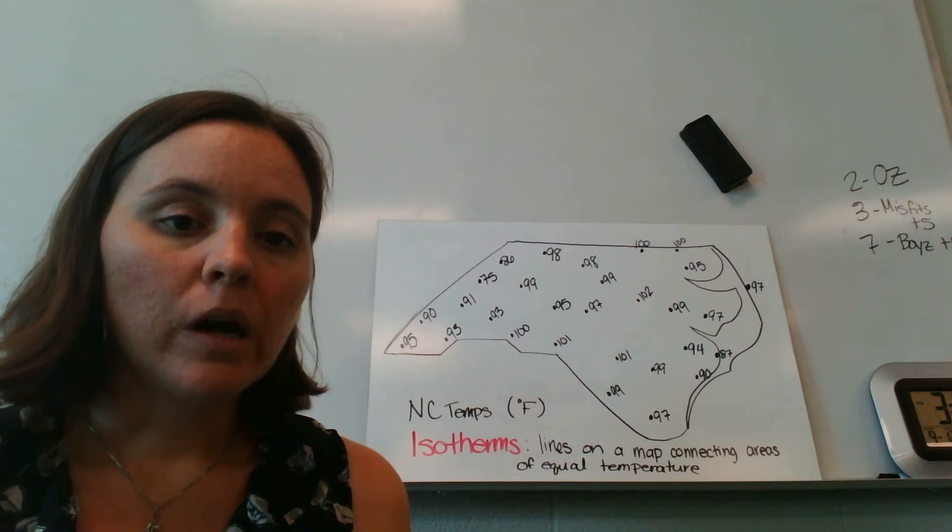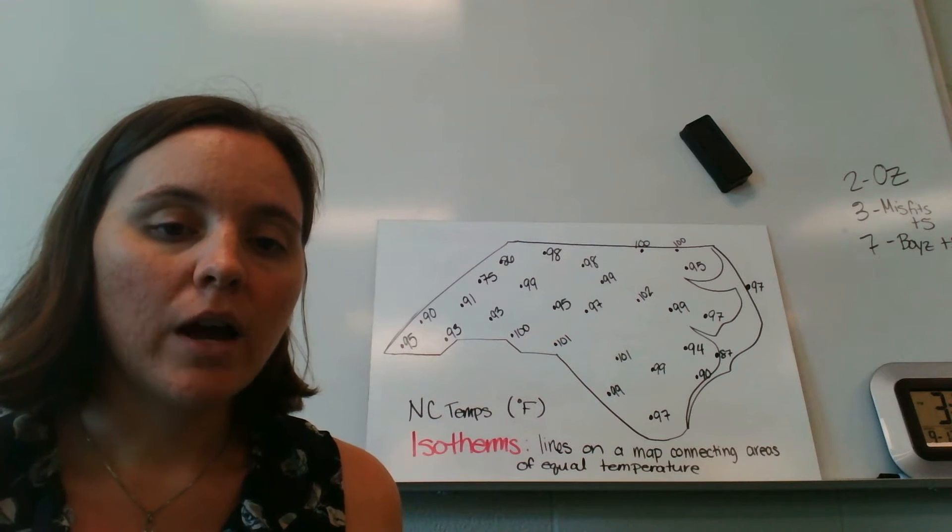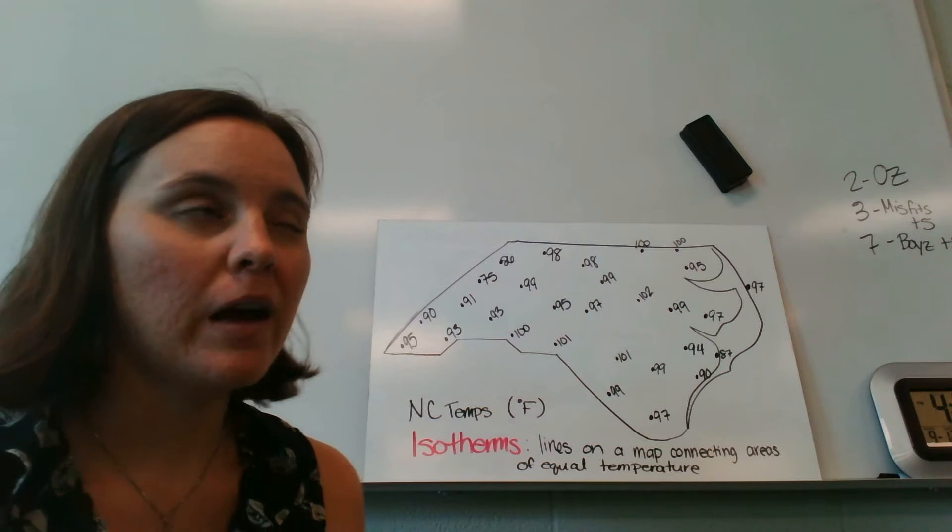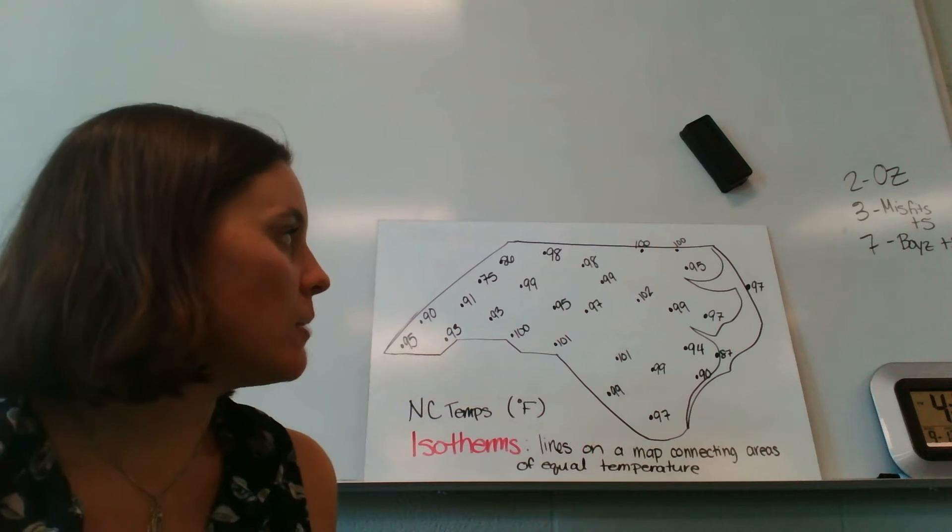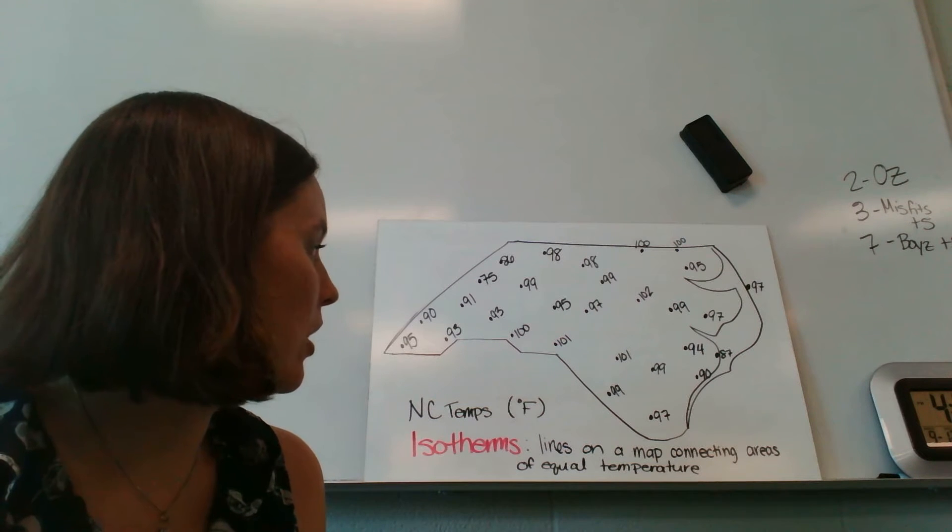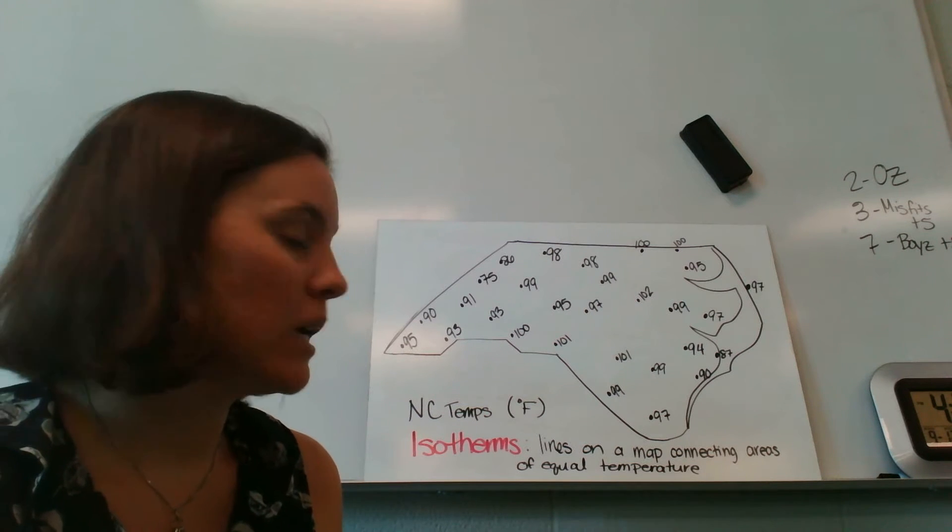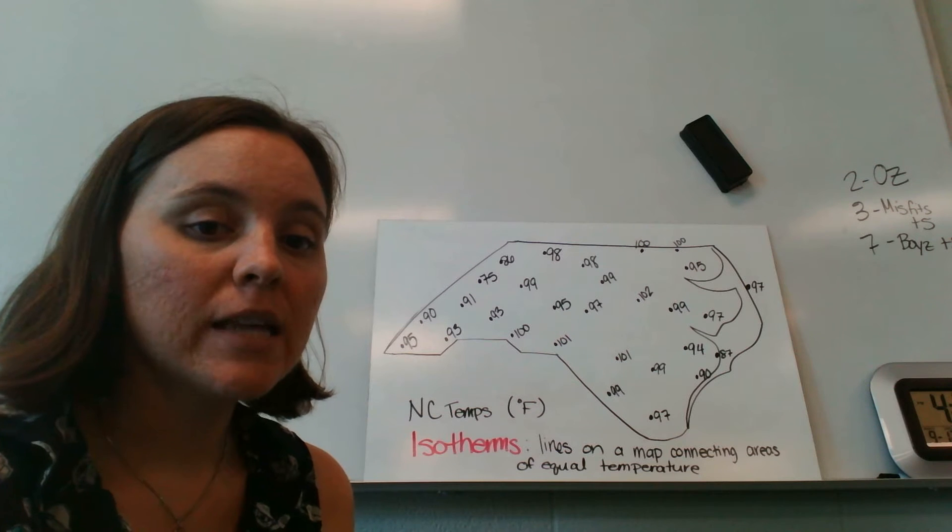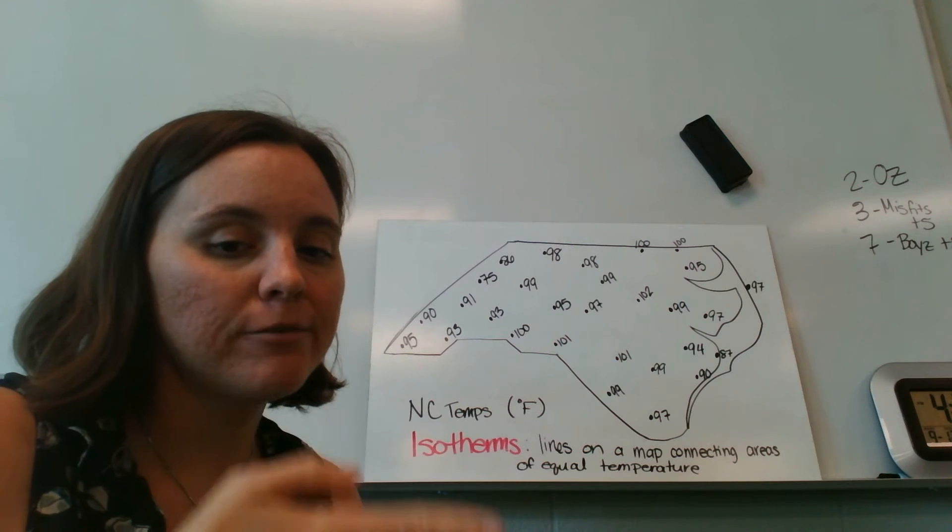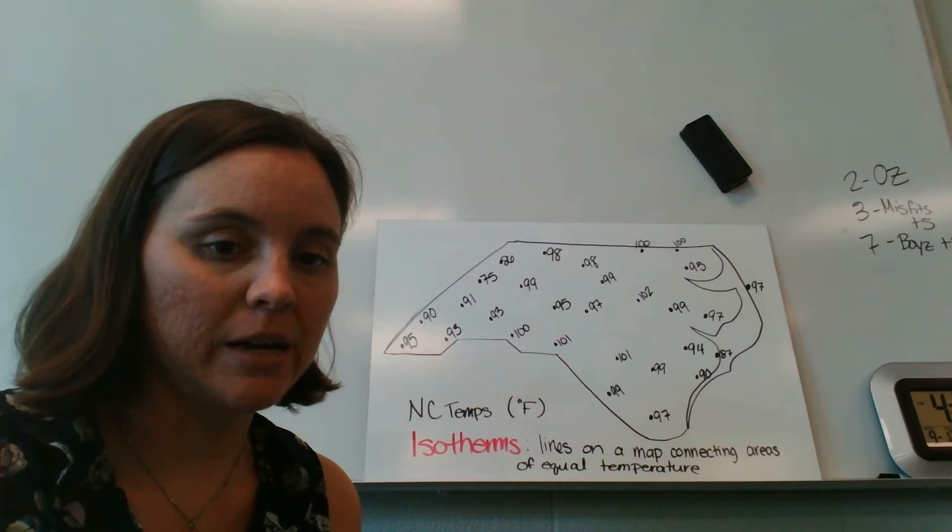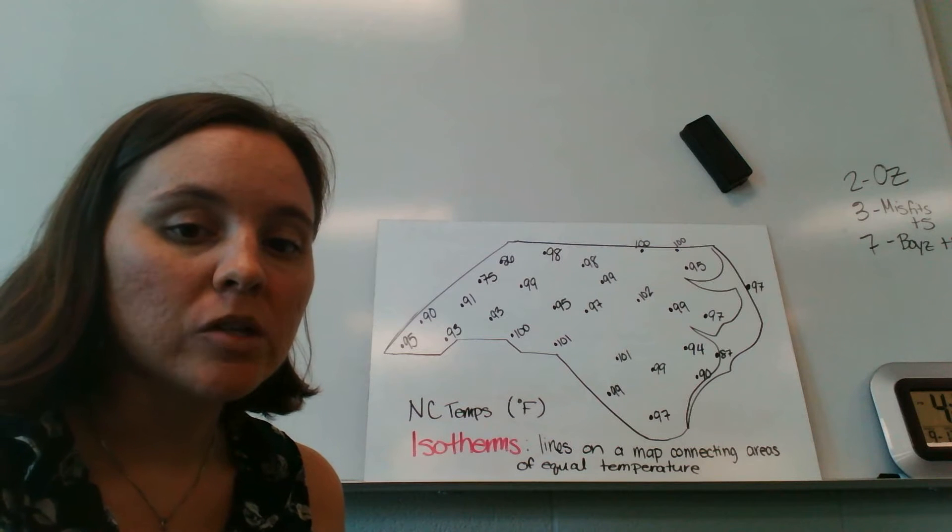So if I wanted to draw isotherms for every five degrees Fahrenheit, but I don't have a lot of places on my map that are exactly like 90 or 95 or 100 degrees Fahrenheit, so I have to interpolate.